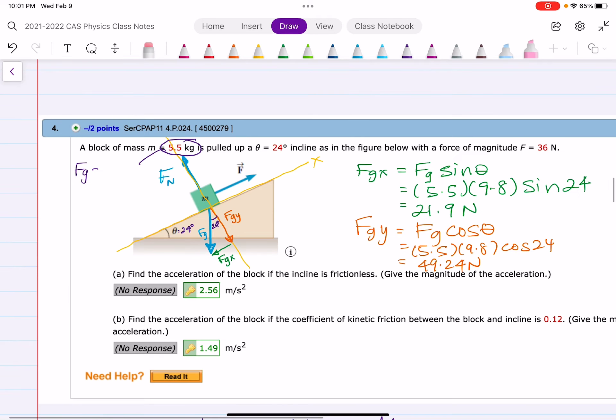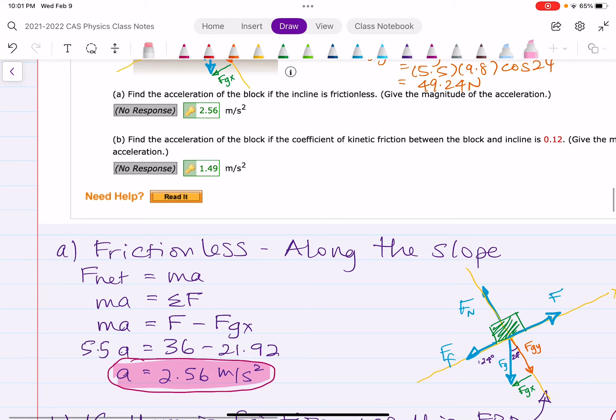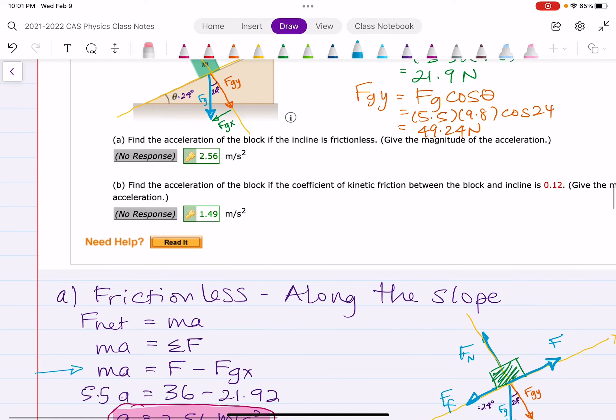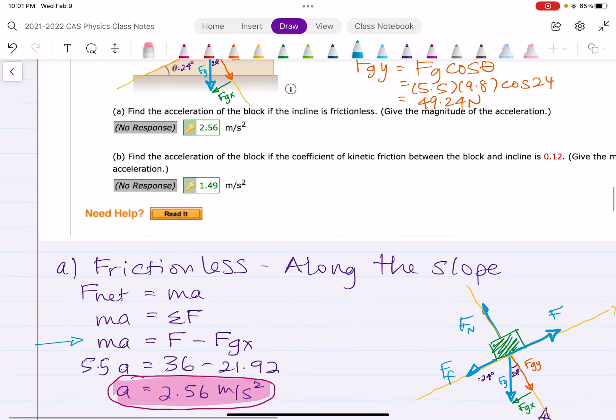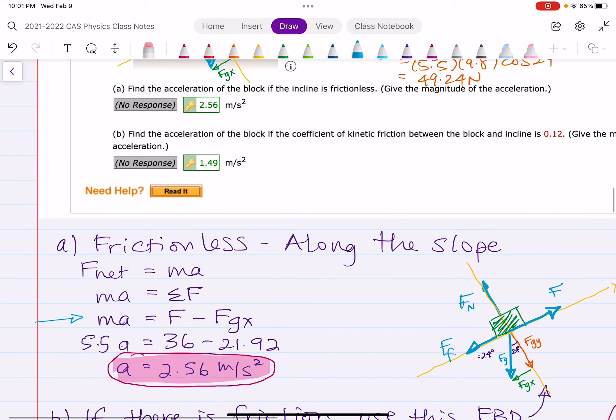So for the first one, when there's no acceleration, we have the two forces acting along the slope. The force that's applied, 36 newtons, minus FGX, which I calculated up there. And I get a number, a value, and then dividing those two by 5.5 gives you the answer of 2.56.